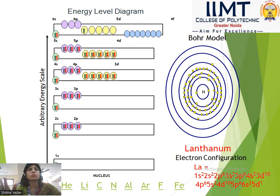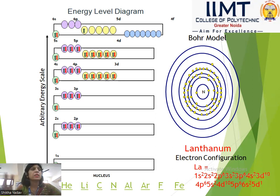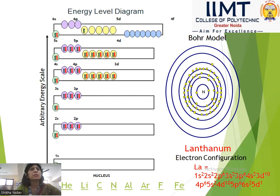How do we fill the electrons? Where does 1s, 2s, 2p come from? How do we know how many electrons to fill in 1s, or how many in 2p? With the help of these three rules, the electronic configuration of the atoms can be explained. We have seen many examples: hydrogen, helium, lithium, carbon, nitrogen, aluminium, argon, chlorine, and iron.